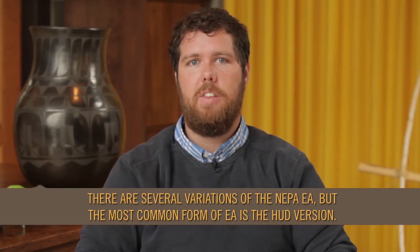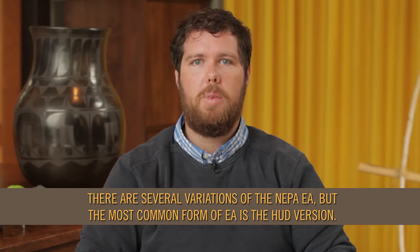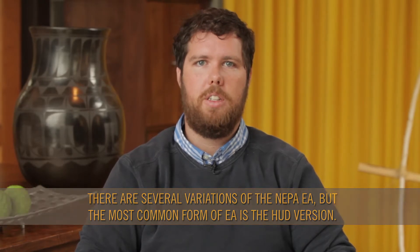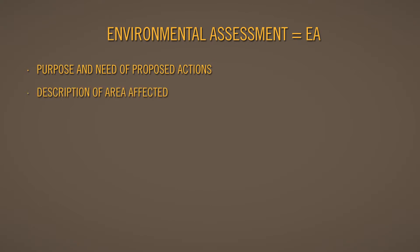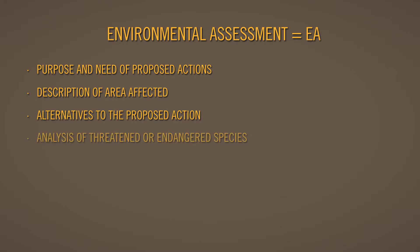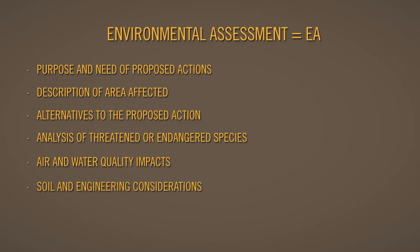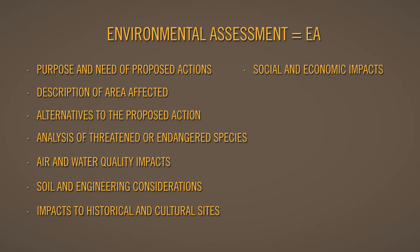There are several variations of the NEPA EA, but the most common form is the HUD version. An EA includes the following: purpose and need of proposed action; description of area affected; alternatives to the proposed action; analysis of threatened or endangered species; air and water quality impacts; soil and engineering considerations; impacts to historical and cultural sites; social and economic impacts; and cost analysis of alternatives.